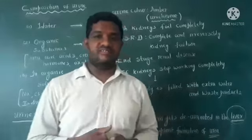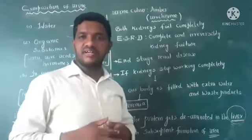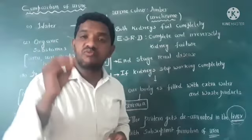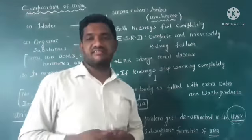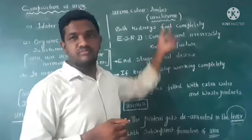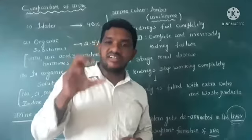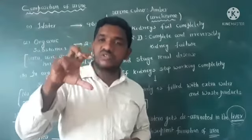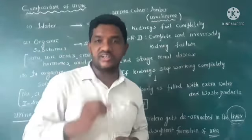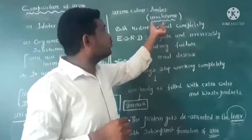What is the color of urine? Urine color is amber — that is, yellow in color. This is because of one pigment present called urochrome. Urochrome is the pigment which gives yellow color to the urine.